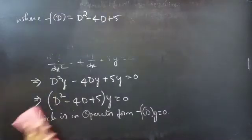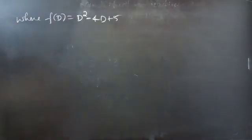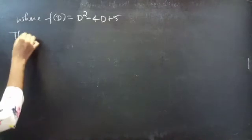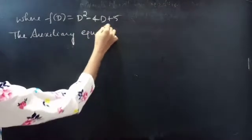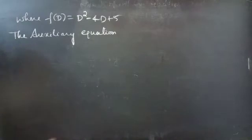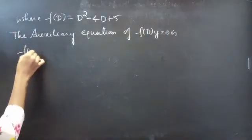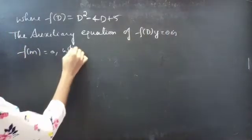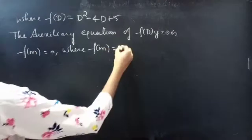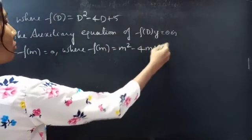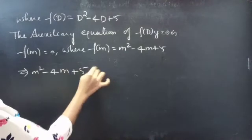Now we will find the general solution to the given equation using the auxiliary equation of f(D) into y equals to 0. The auxiliary equation of f(D) into y equals to 0 is f(m) equals to 0, where f(m) is obtained by replacing differential operator D by m. It is m squared minus 4m plus 5. So the auxiliary equation will be m squared minus 4m plus 5 equals to 0.